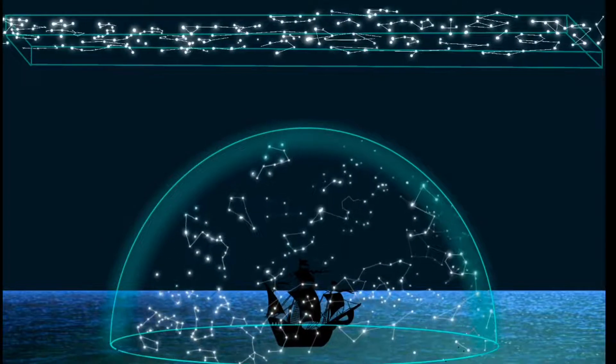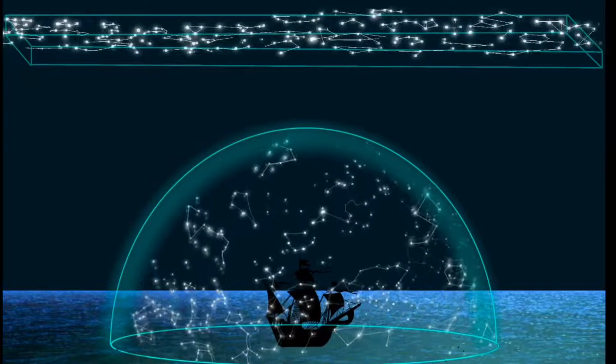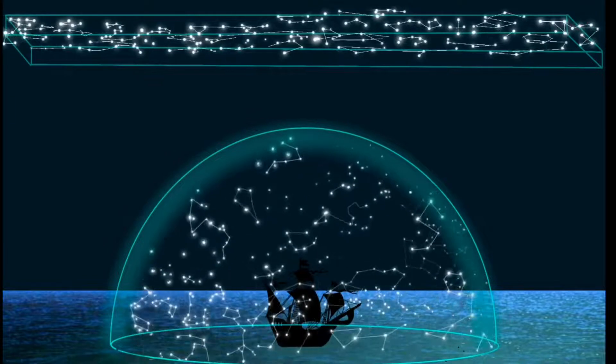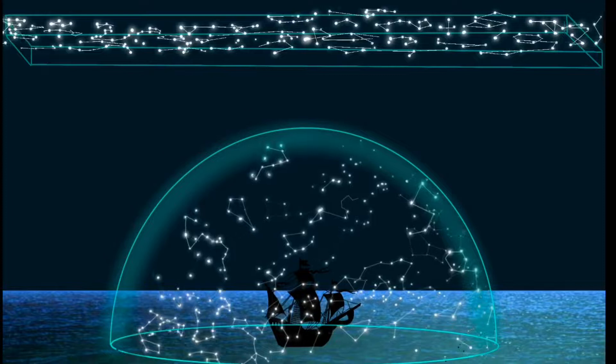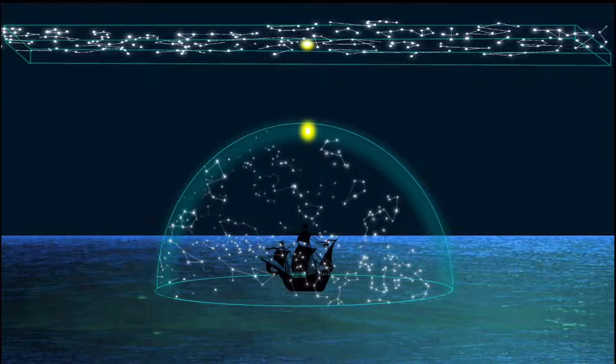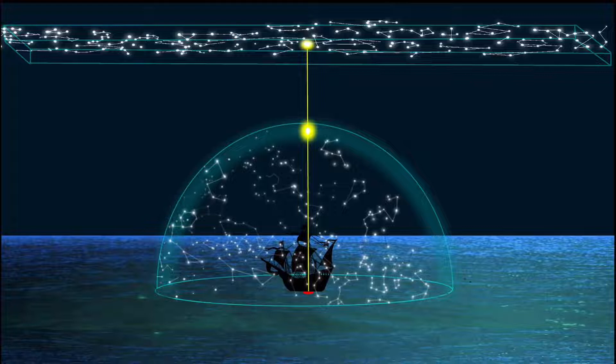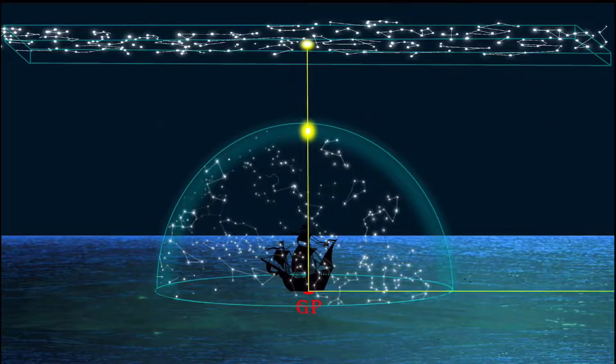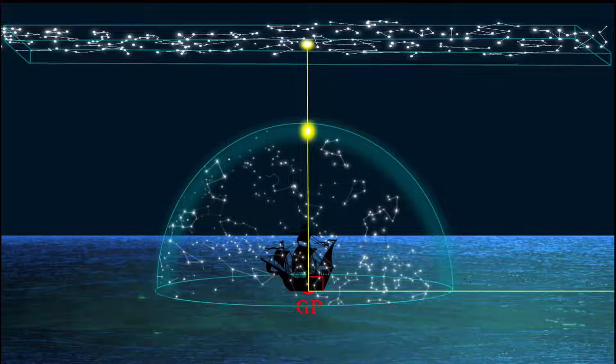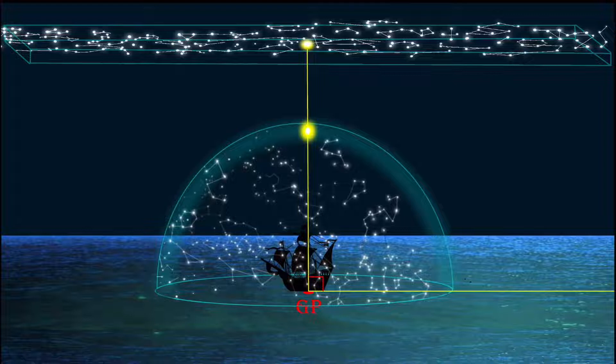Now that we understand that the flat celestial plane above us presents itself as a dome to our perspective point down here on the plane that we exist, we can understand how the celestial navigation actually works. Every star in the flat celestial plane has a position relative to our flat plane where it will be 90 degrees. This is called the geographical position, or the GP, of that star relative to our flat plane here on Earth. When the observer is at the GP of the star, it appears 90 degrees above their head.